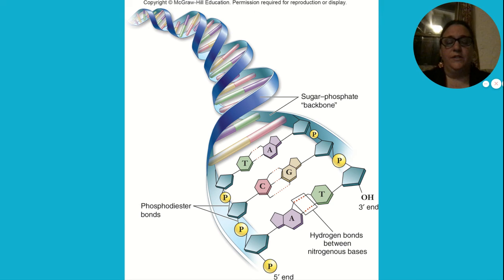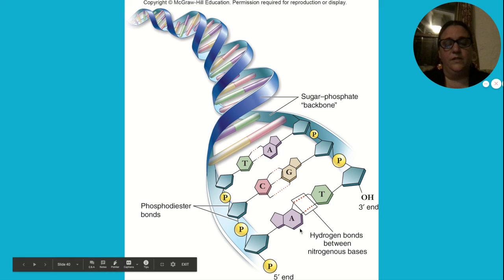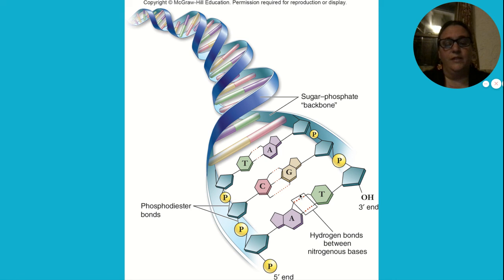Here's another picture — this is of DNA, and we know because it's got the two pieces. Here is one nucleotide, and here's another nucleotide. In DNA, they're held together by these things called hydrogen bonds.